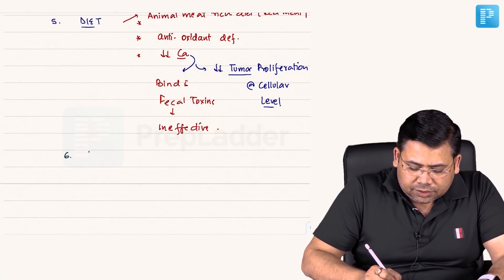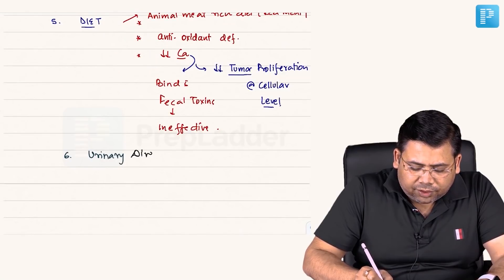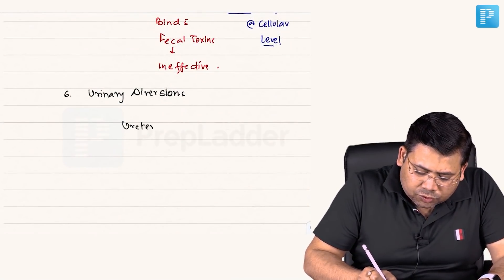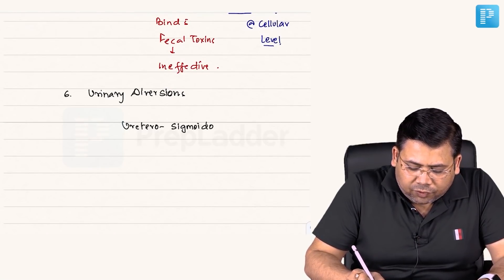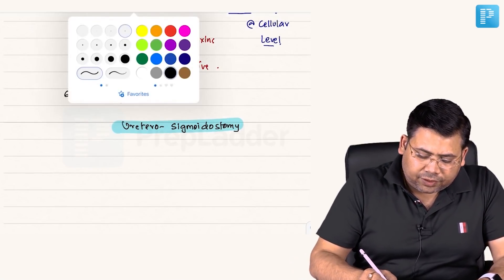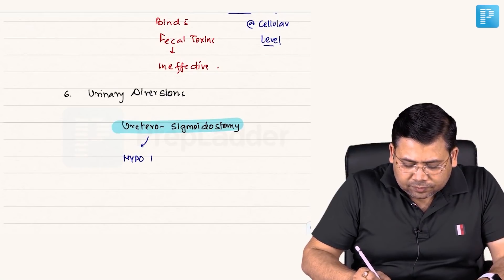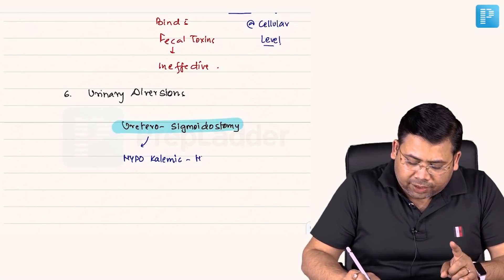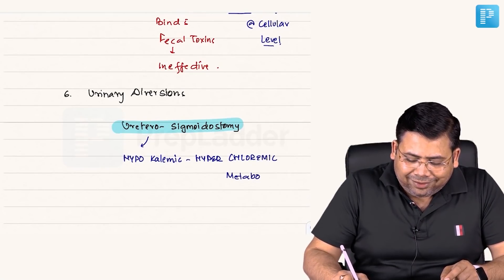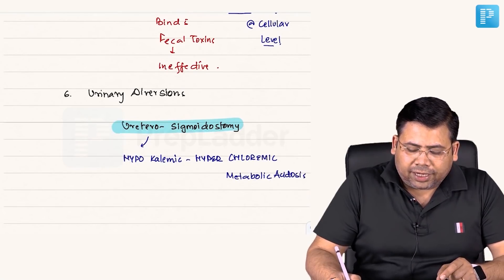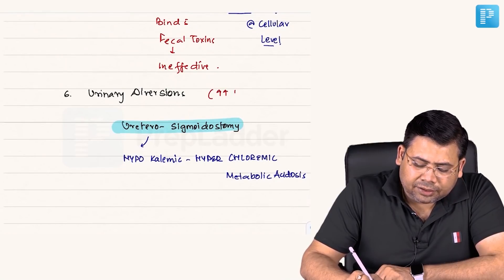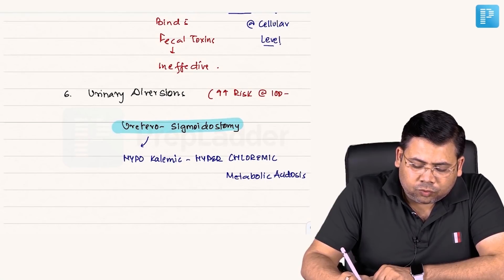Sixth is urinary diversions — for example, ureterosigmoidostomy. The classical problem associated with ureterosigmoidostomy is hypokalemic hyperchloremic metabolic acidosis. And it increases the risk of colonic adenocarcinoma by 100 to 500 times — this is very important.